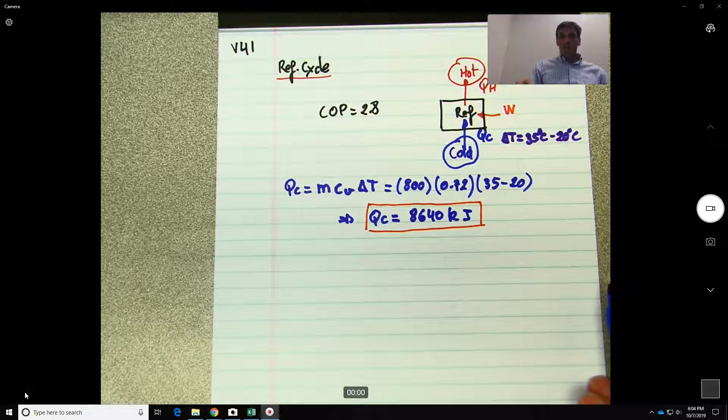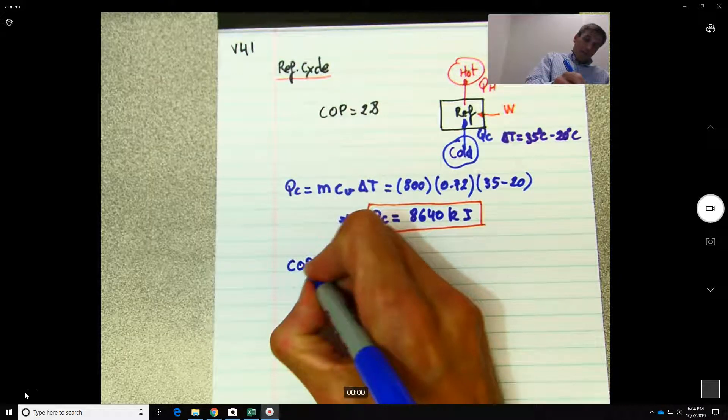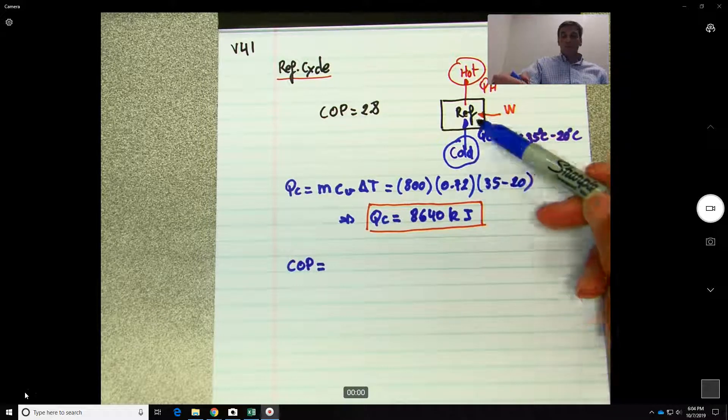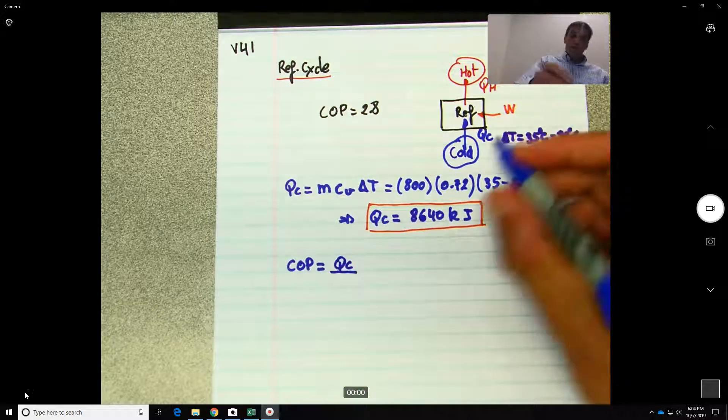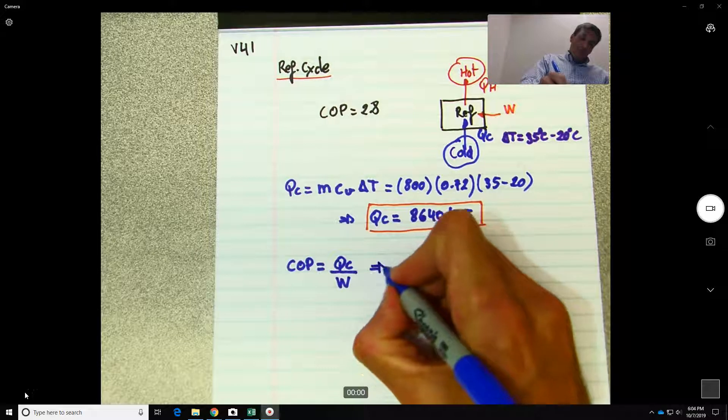Alright, next we know that what is the coefficient of performance? If you remember, we always say: what are you trying to achieve? Put cold. What do you need to provide? You need to provide work or power.